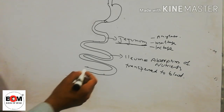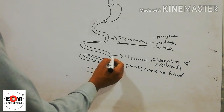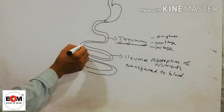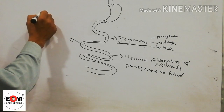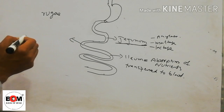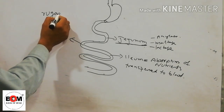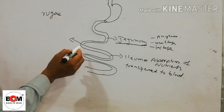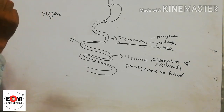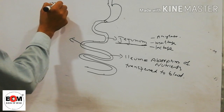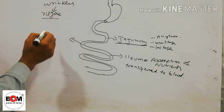The ileum is not smooth. In the ileum, there are wrinkles called rugae. These wrinkles increase the surface area for absorption.